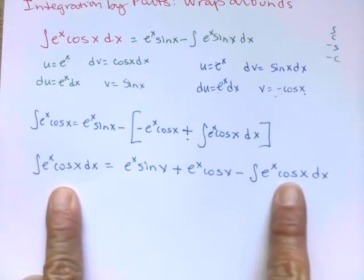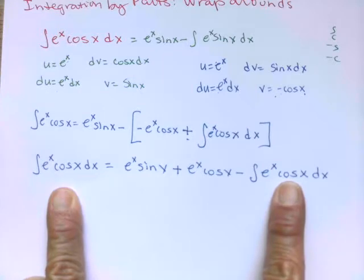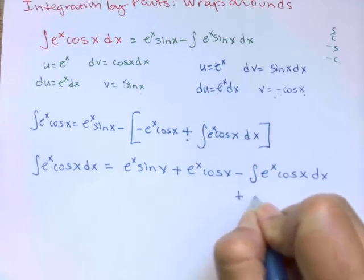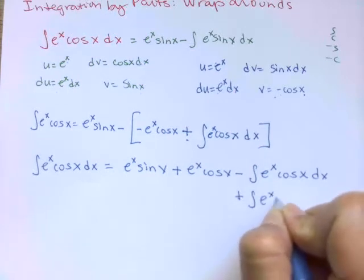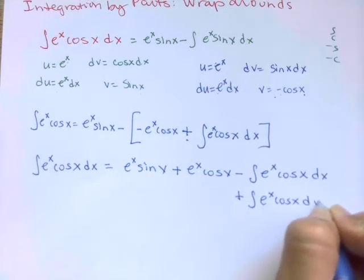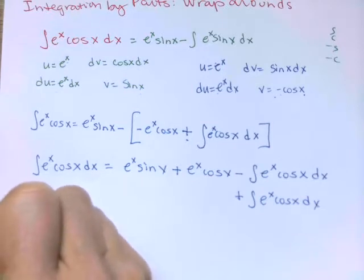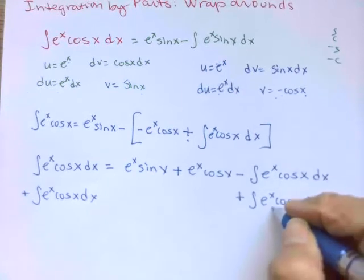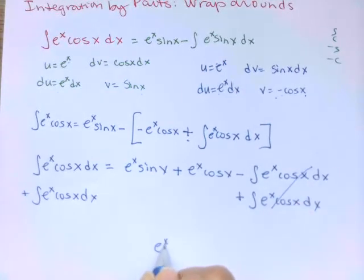It's like like terms. So I'm going to add this negative integral e to the x cosine x dx to both sides. They're going to add out on the right, and what do you suppose it's going to be on the left?